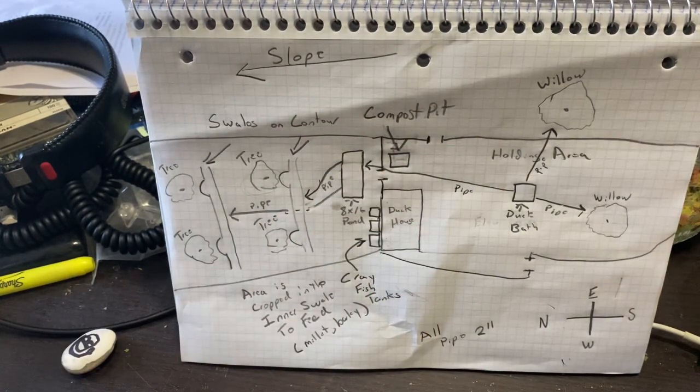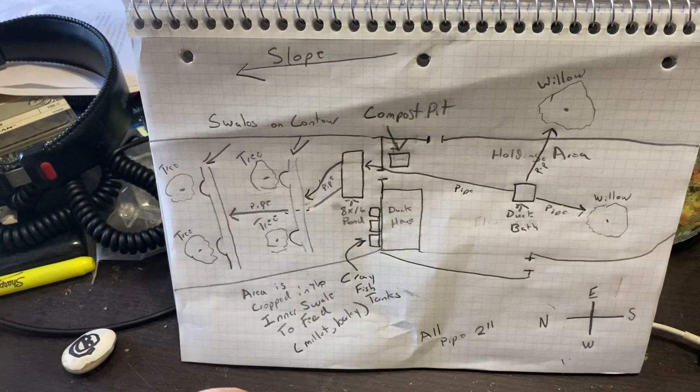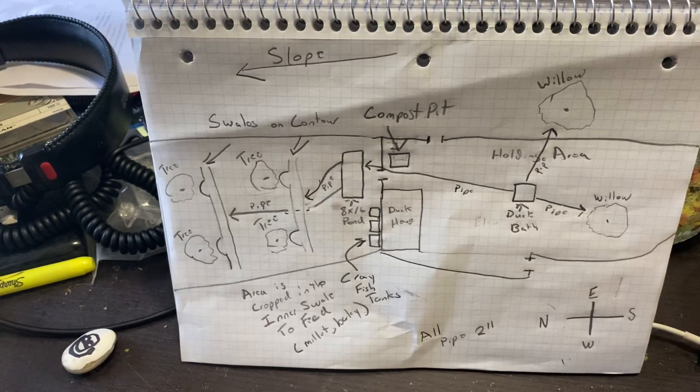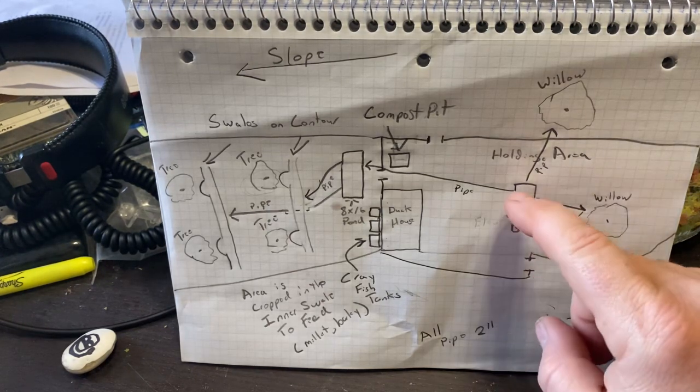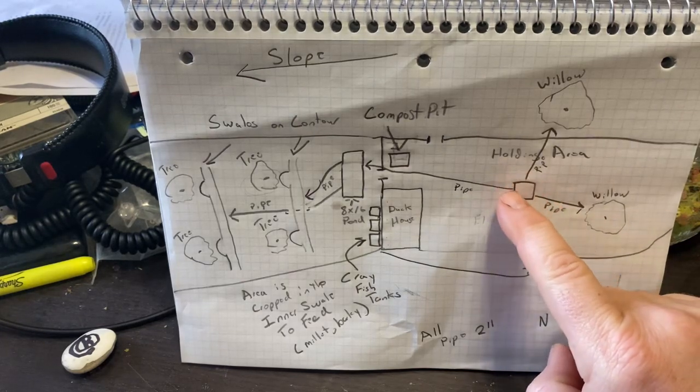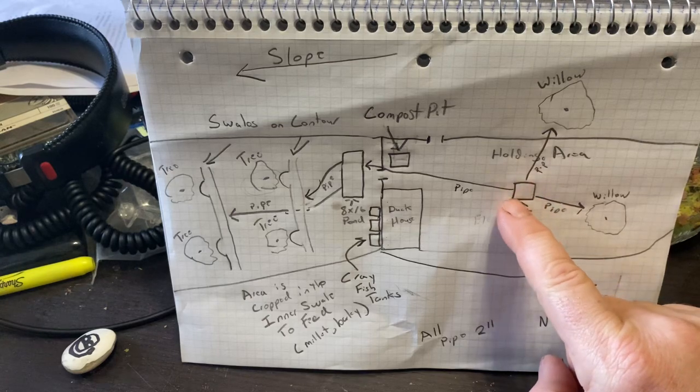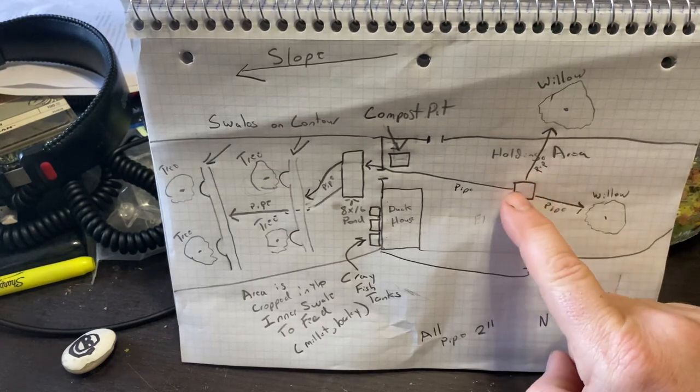So there's your pond, your duck house, your compost pit. That's where a lot of people would stop. The thing is, this stuff grows really well on high fertility water. You know what makes water highly fertile? Duck crap. You know what ducks like to do? Get in the water and crap.